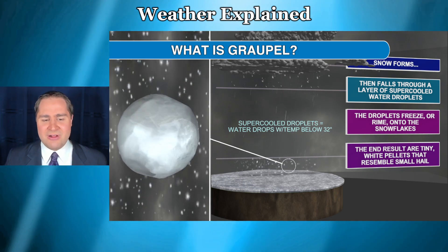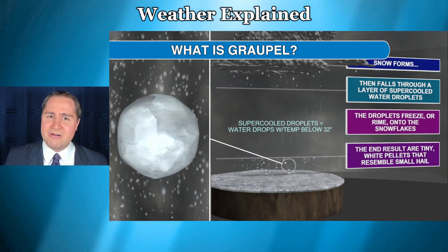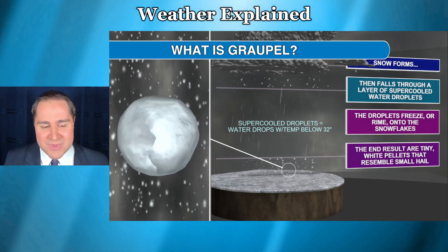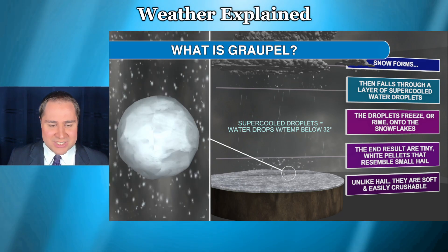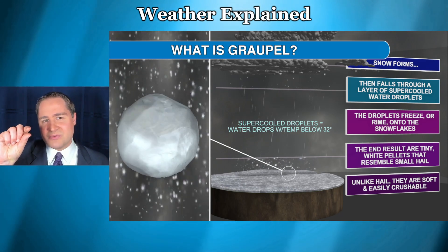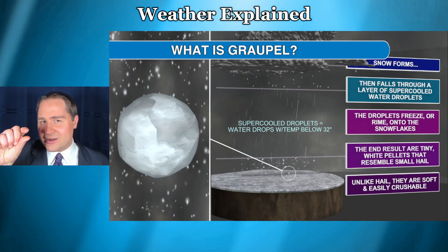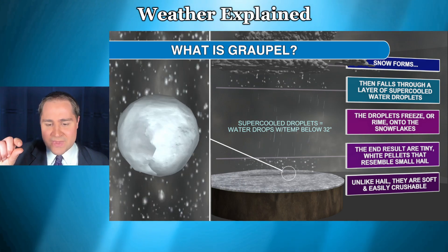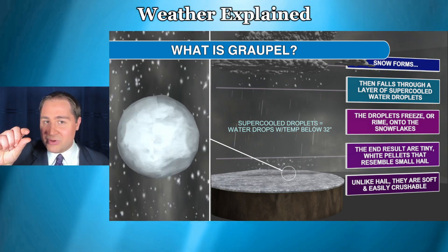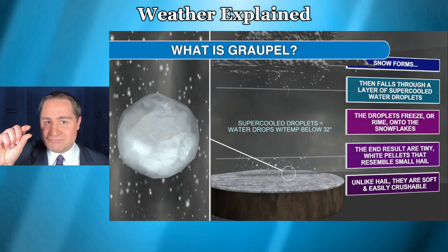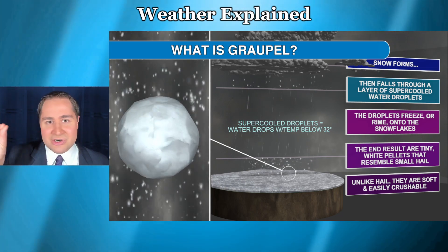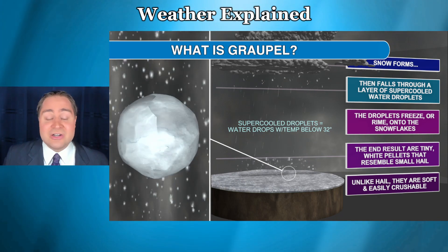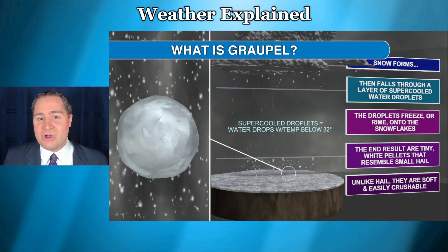So how can you tell hail apart from graupel? Well, the best way is actually just to pick it up. If you pick up a piece of pea-sized hail and squeeze it between your fingers, it's not going to be crushed very easily — it's pretty hard. But if you pick up a piece of graupel and squeeze it between your fingers, it's just going to fall apart and crumble, because it's really soft, like snow. In fact, another name for graupel is soft hail.